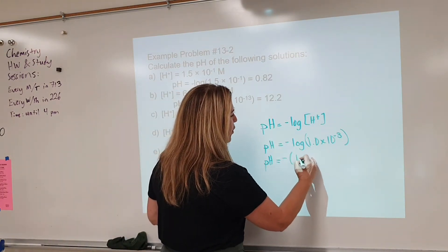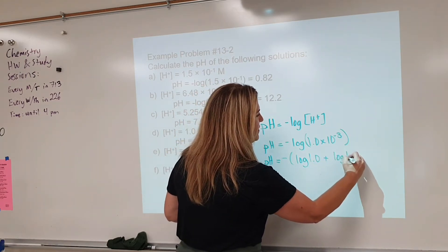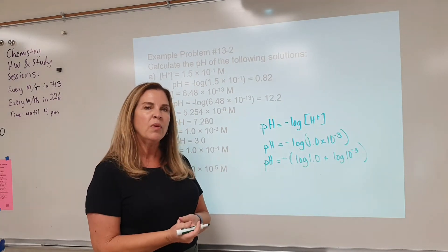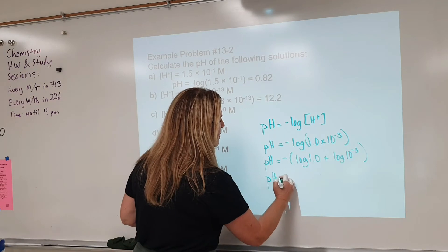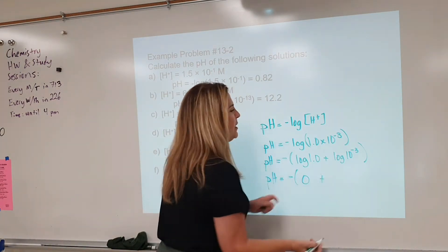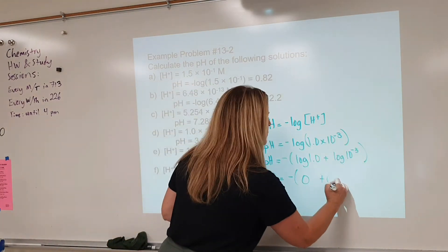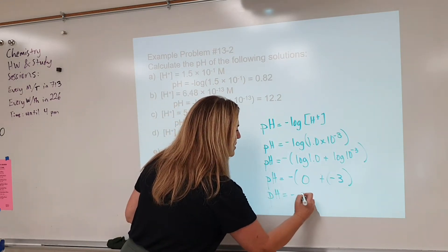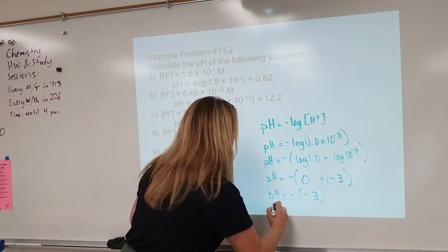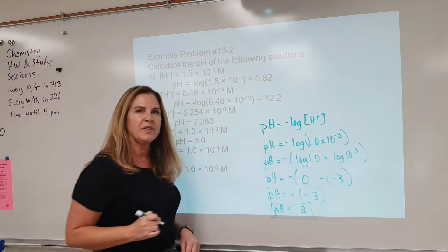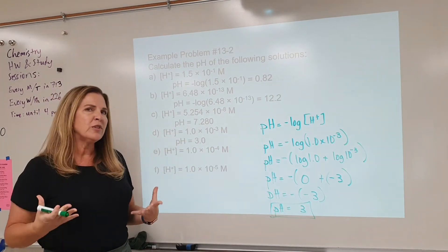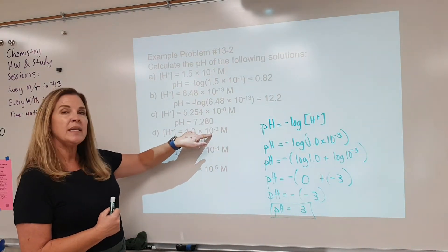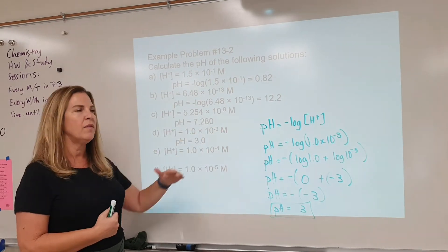Using the distributive property of logs, we have the negative of [log of 1.0 plus log of 10 to the minus 3]. If you grab your calculator and hit log of 1, you'll find that the log of 1 is always 0. The log of 10 raised to a power is that power, so that's negative 3. Adding 0 plus negative 3, we have pH equals negative of negative 3. A negative times a negative is a positive, so this gives us a pH of 3.